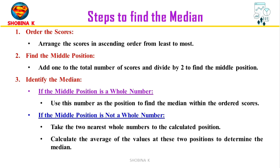There are three key steps. Step 1 is to order the scores — arrange the scores from least to most. In Step 2, find the middle position: add 1 to the total number of scores and divide by 2. In Step 3, we identify the median.